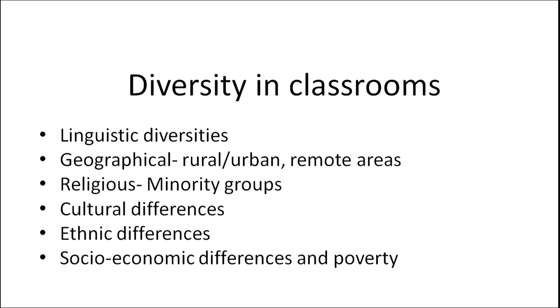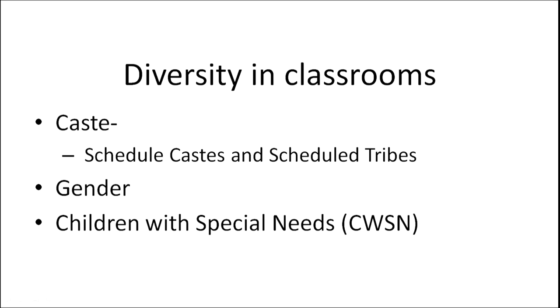We find there is linguistic diversity, geographical diversity — rural, urban, and children from remote areas coming to the classrooms. We find that there is a lot of diversity based on religious or minority groups. We find cultural and ethnic diversities, and we also find that there are children who belong to the lower socio-economic strata and from poverty-affected families. In the Indian scenario, caste system also plays a major role and there are children from varied scheduled castes and scheduled tribes. There are gender differences in our classrooms and we also find that there are children with special needs.